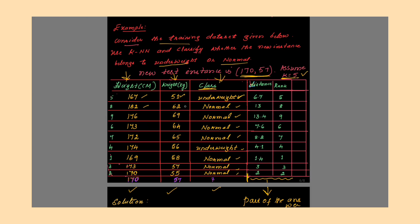If height is 182 and weight is 62, it belongs to normal category. There are 9 instances in the training dataset. The new test instance given in the problem statement is 170 and 57. That means if height is 170 and weight is 57, you need to find out to which category this new instance belongs — underweight or normal.